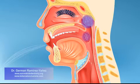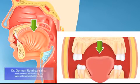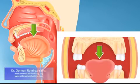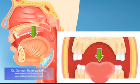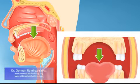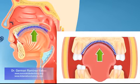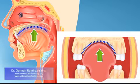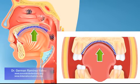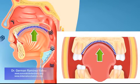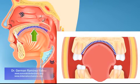In order to breathe through your mouth, your lower jaw has to come down, and your tongue has to rest on the floor of your mouth. Breathing through the nose is the correct way, and so the tongue is able to rest on your palate, stimulating a normal growth and development of your upper jaw.